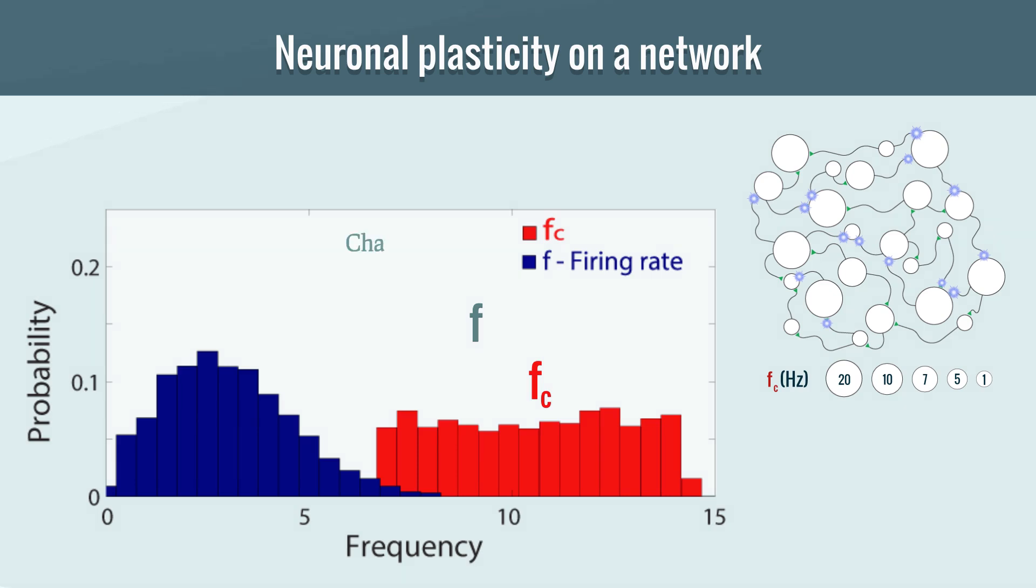The chain mechanism drives the firing frequency to the tail of the fc distribution, and the heterogeneous mechanism drives it even lower.